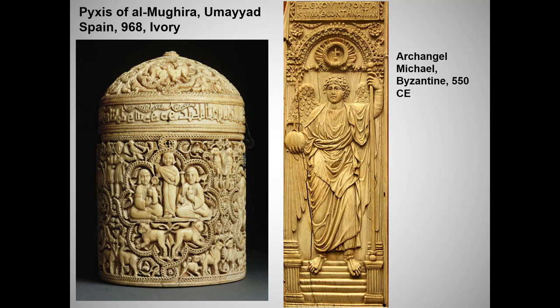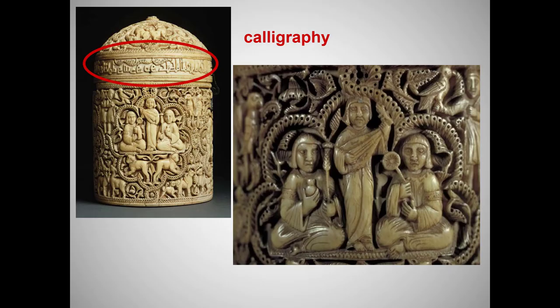Before I reluctantly leave Al-Andalus, let me talk about the last of our required works from this region. A pyxis is a cylindrical container that held aromatic spices, cosmetics, or even jewelry. This pyxis was a gift to a son of the caliph, perhaps in honor of his 18th birthday. It was carved from ivory from an elephant's tusk — a beautiful, durable, but easily carved material that was very popular in both Islamic and Byzantine culture. Note the calligraphy just below the lid. It reads: 'Blessings from God, goodwill, happiness, and prosperity to Al-Mughira, son of the commander of the faithful, may God's mercy be upon you.'